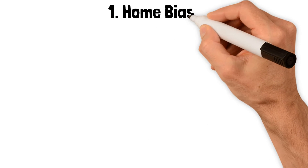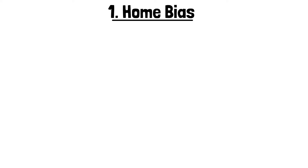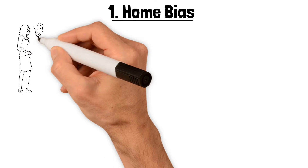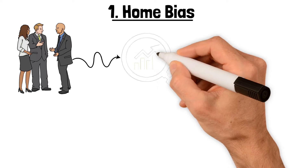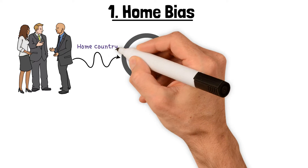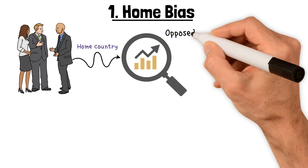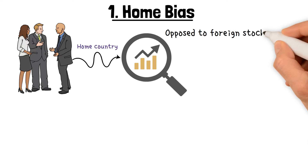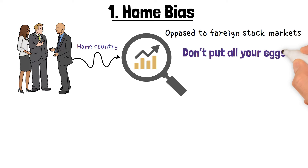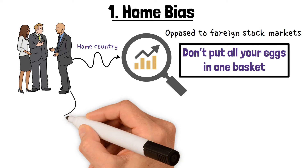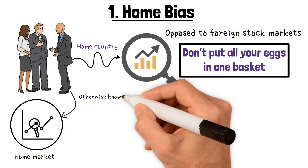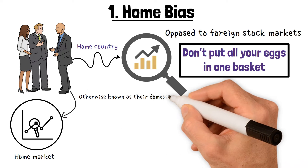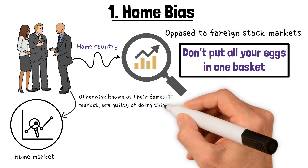Home bias refers to the tendency of some investors to prefer investing in the stock market of their home country, as opposed to foreign stock markets. You may be familiar with the term, don't put all your eggs in one basket. Investors that overinvest in their home market, otherwise known as their domestic market, are guilty of doing this.